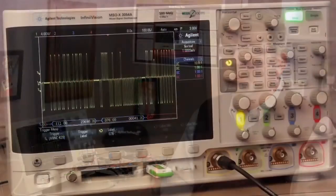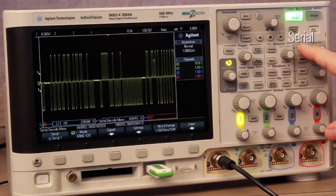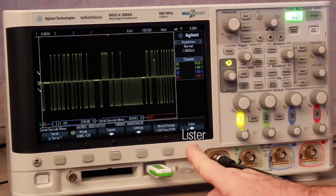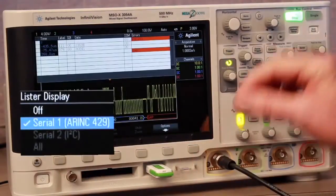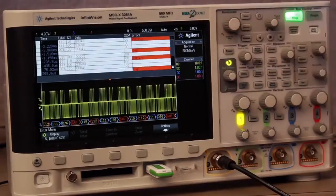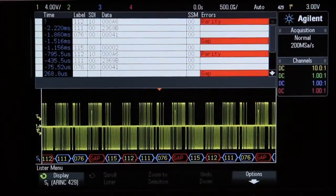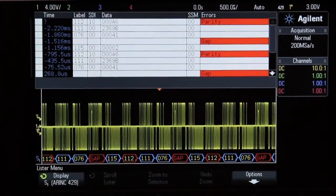In addition to viewing the time-correlated decode trace that you see below the waveform, we can also view the same information in a tabular format with clearly labeled columns of data that directly correlate to the fields of decoded data shown in the time-correlated decode trace below the waveform.